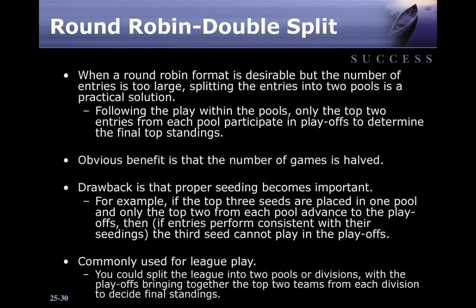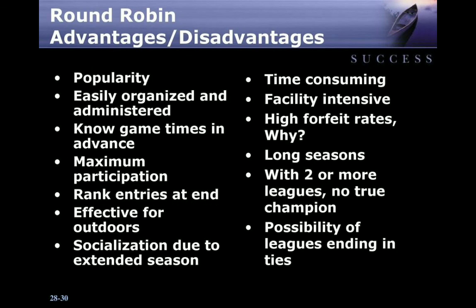This format is commonly used for league play. You could split the league into two pools or divisions, with playoffs bringing together the top two teams from each division to decide final standings. Round Robin advantages and disadvantages: it is popular, easily organized and administered, offers no predetermined game time, provides maximum participation, and ranks entries at the end. It is effective for outdoor settings and promotes socialization due to an extended season. Disadvantages include being time consuming, facility intensive, having a high forfeit rate, a long season, requiring two or more leagues for a true champion, and the possibility of leagues ending in ties.